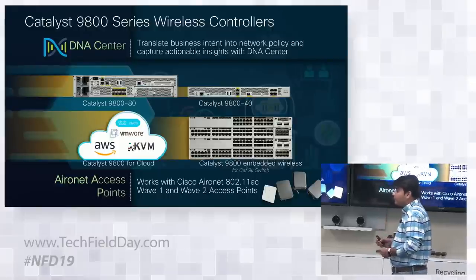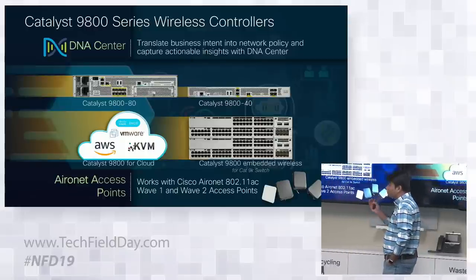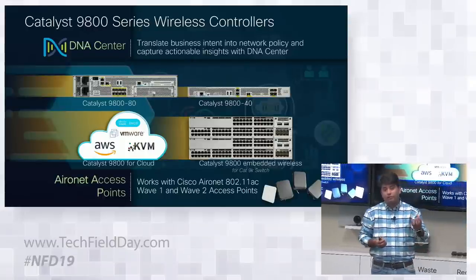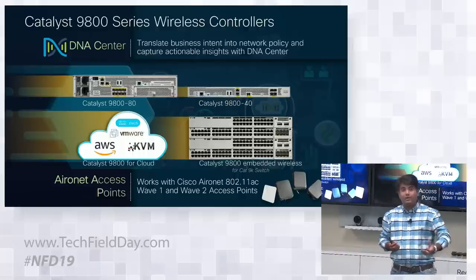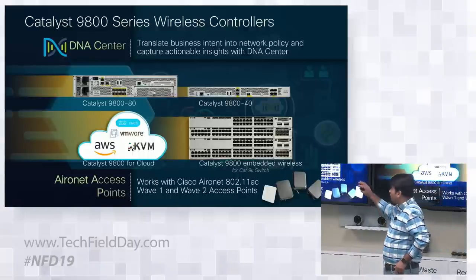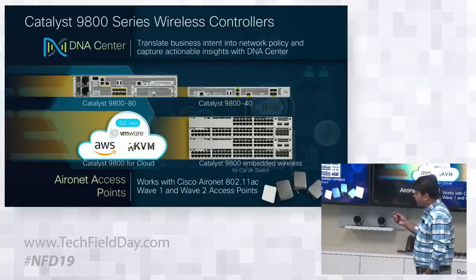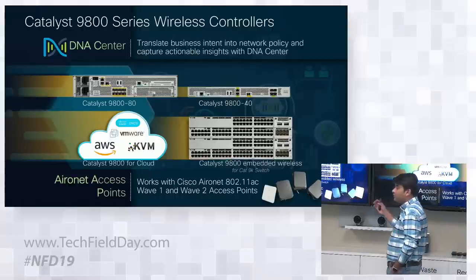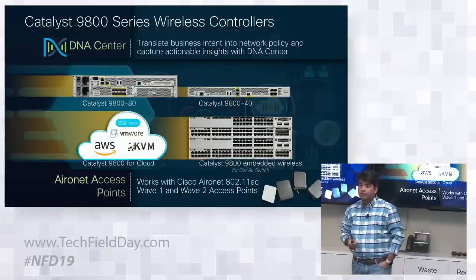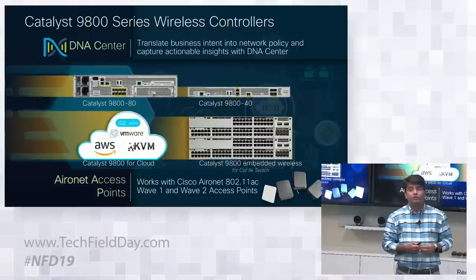The 9800 comes in different form factors: a hardware appliance, a virtual machine running on private or public cloud, and also as a software package embedded on the Catalyst 9300 switching platform. Catalyst 9800 will support all Wave 1 and Wave 2 indoor and outdoor access points, and whenever 802.11ax gets introduced, Catalyst 9800 will also support that.